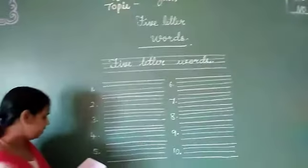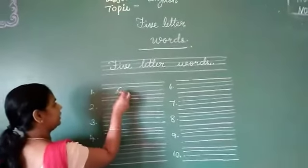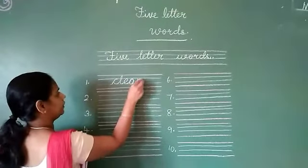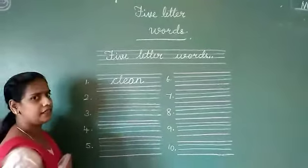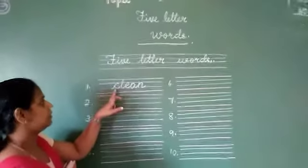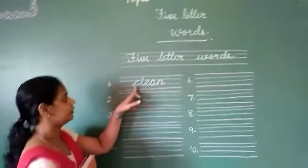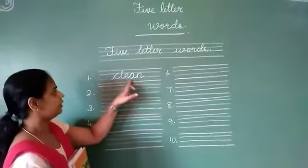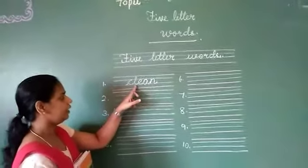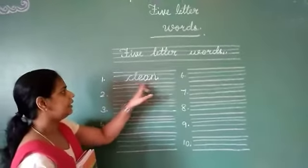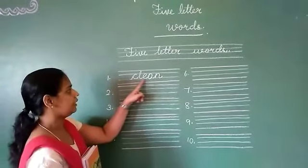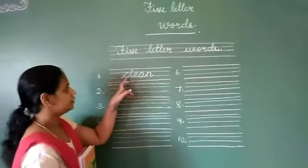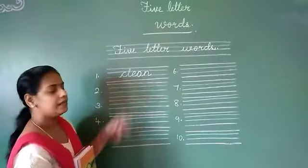So let's start children. The first word is C-L-E-A-N. The sound of letter C is K. So K-L-E-A-N. Together: Clean. C-L-E-A-N. Clean.